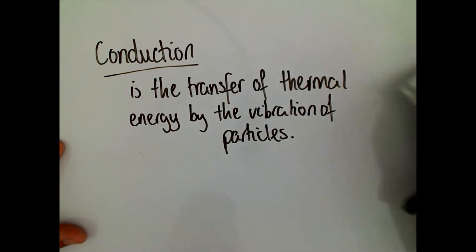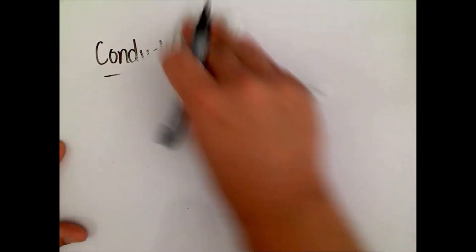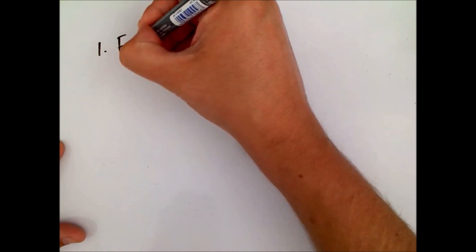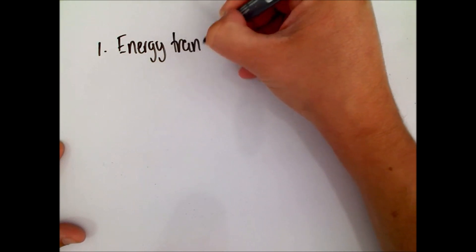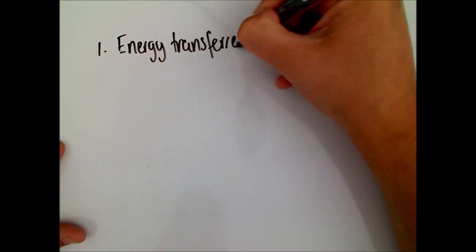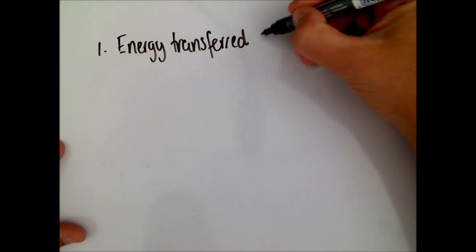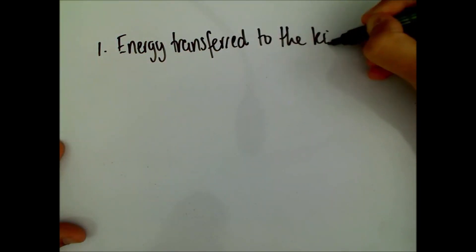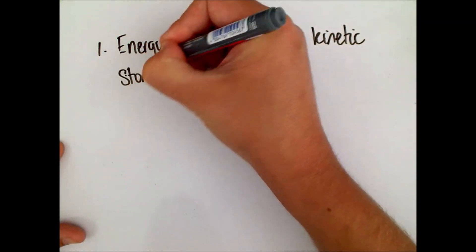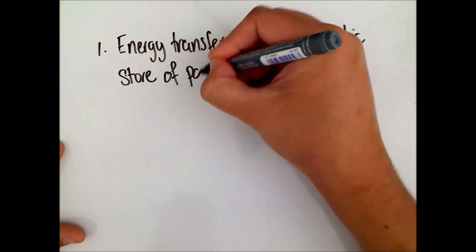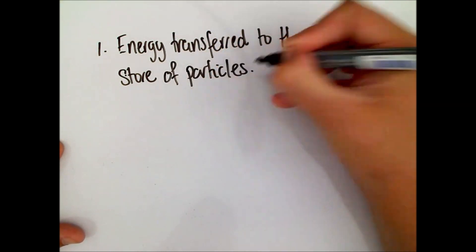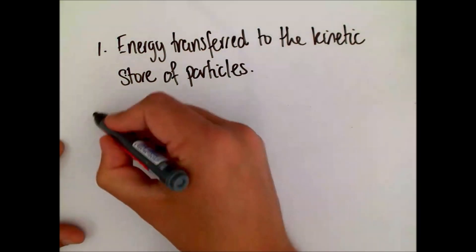And our steps for conduction: firstly, the energy is transferred to the kinetic store of particles. So in our example, that was the hot hob causing the particles in the pan to move.